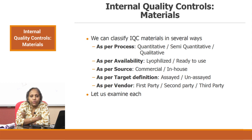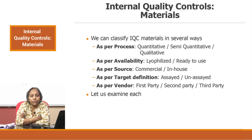Before we start talking about internal control materials, we need to understand that internal control materials can be classified in very many ways. As per process, it can be a qualitative control or a quantitative control. As per material availability, it can be lyophilized material or ready-to-use material. As per source, it can be classified as commercial or in-house controls. As per target definition, you can classify it as assayed or unassayed controls. And as per the vendor supplying the material, you can classify these as first party, second party, or third party controls.